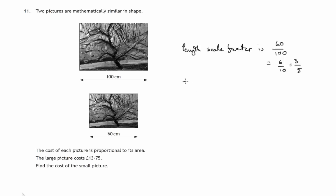And therefore the area scale factor, that's the reduction scale factor from the large to the small, would be that squared. Therefore the cost of the smaller picture would be equal to £13.75 times that scale factor.